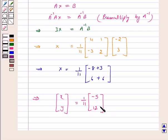So, by equating the corresponding elements we get X is equal to minus 5 by 11 and Y is equal to 12 by 11.